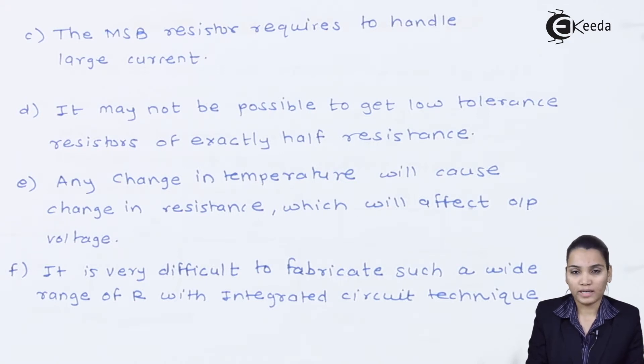Now the next drawback is it is not at all possible to always get a tolerance level exactly half of the previous one or exactly double of the next one. Therefore, it is very difficult to manage the tolerance level.